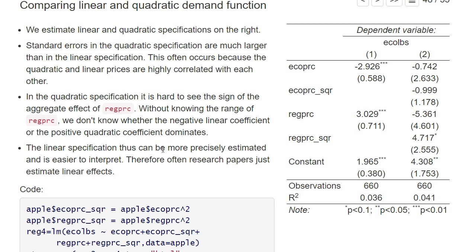These are two reasons why research papers often stick with a linear specification or perhaps a specification in logs: the coefficients can be more easily interpreted, and one can more precisely estimate the coefficients. So you see a lot of linear specifications in empirical papers, even though people do not necessarily believe that all effects are just linear.